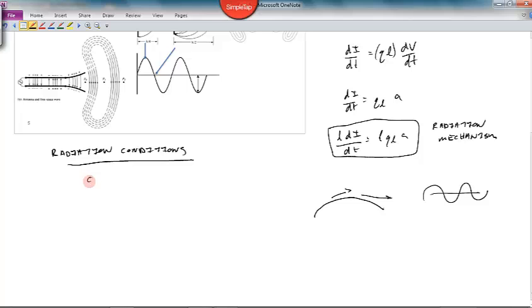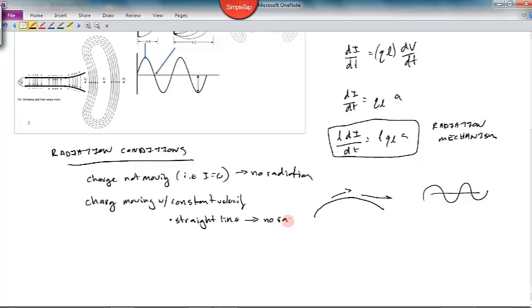If we've got charge not moving, that means there's no current. No radiation. If charge is moving, then we have current. What if we have charge moving with constant velocity? Well, if it's in a straight line, so a DC current, no radiation because there's no acceleration.